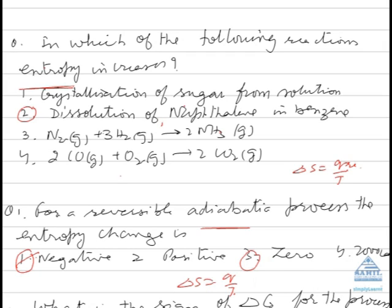So we apply this formula delta S is equal to Q upon T only for a reversible process. If at all you have to apply for irreversible, then we will say considering the surroundings to be very large so that it becomes reversible.